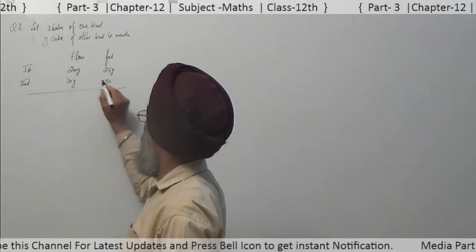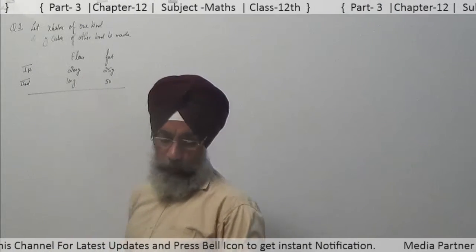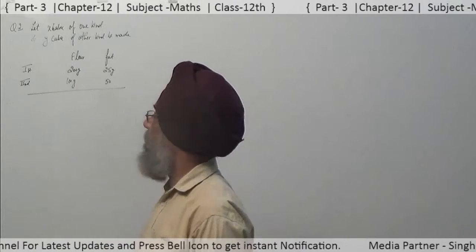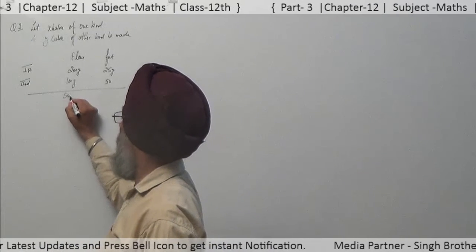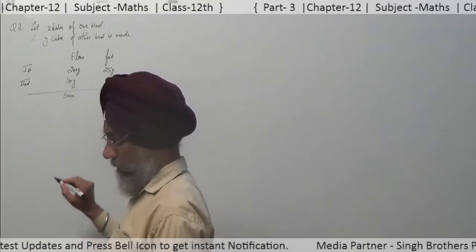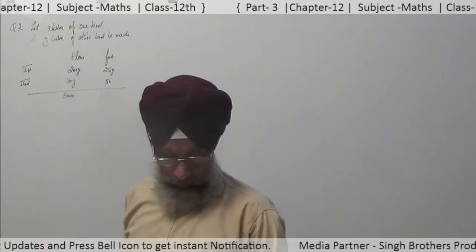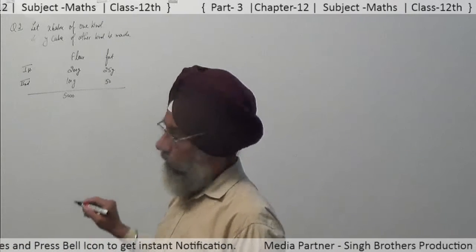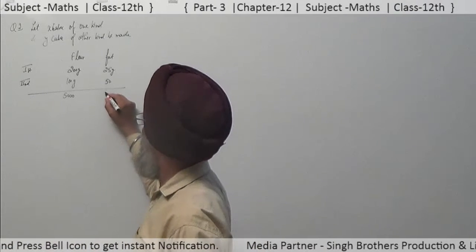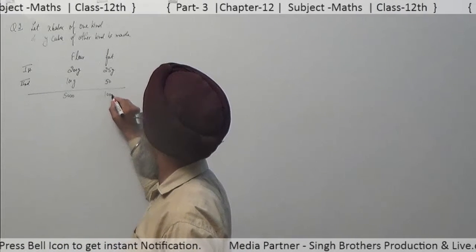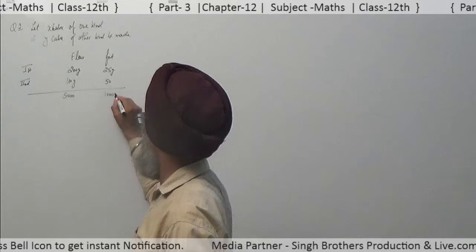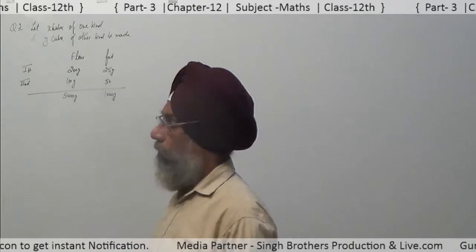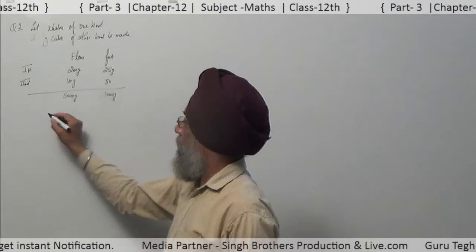The total flour available is 5 kg, which means 5000 grams. The total fat available is 1 kg, which is 1000 grams. Now, how do we form the equations?